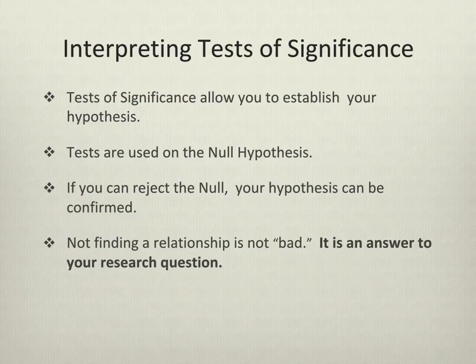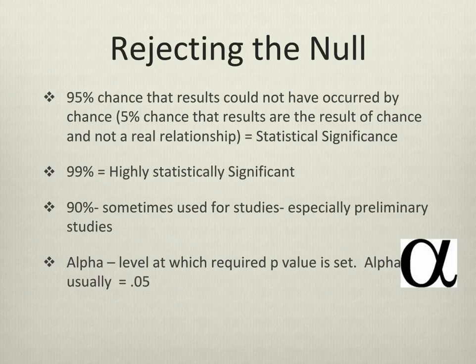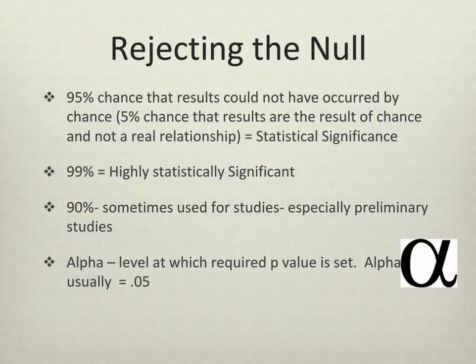When testing your hypothesis, you can decide you want to be confident at the 95% level, which is generally what most people do. The 99% level is highly statistically significant and is used for very important studies or critical findings. Or the 90% level, sometimes used for preliminary studies or to just get an idea of what a larger study should be looking for.